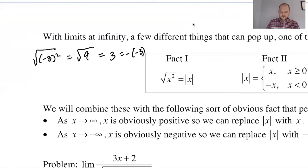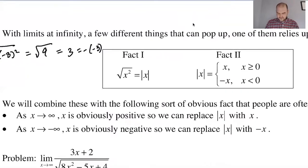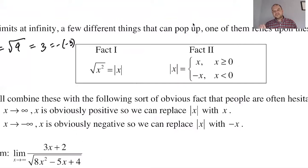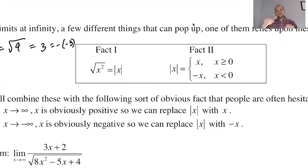Using that property: the absolute value of x is defined to be x when x is greater than or equal to zero — for example, the absolute value of 15 is 15. And it's the opposite of x when x is less than zero. So the absolute value of negative three is the opposite of negative three.